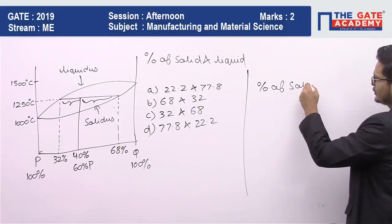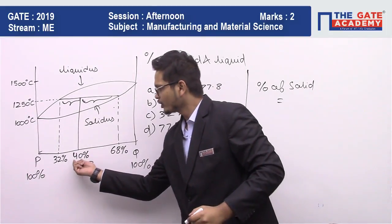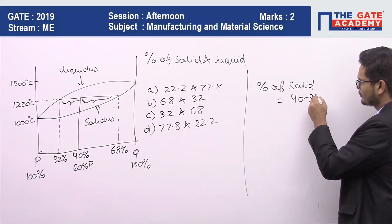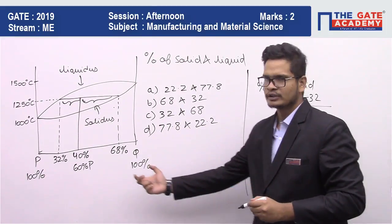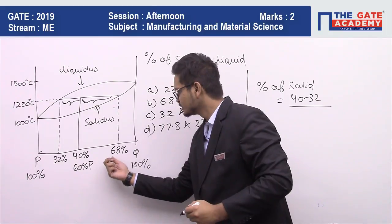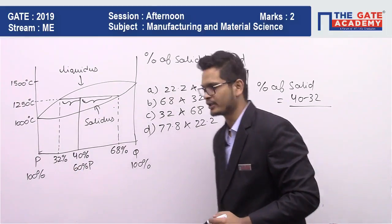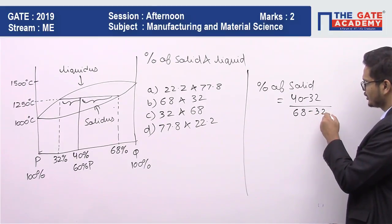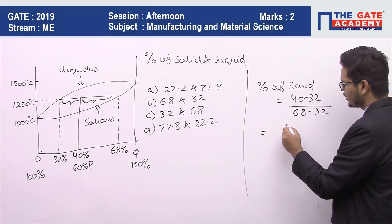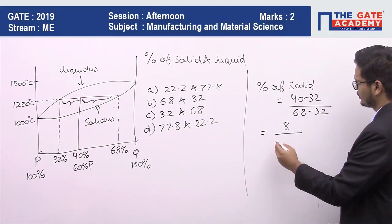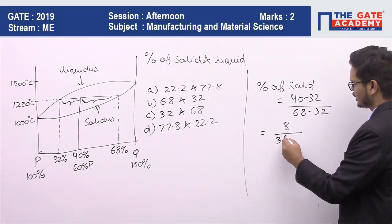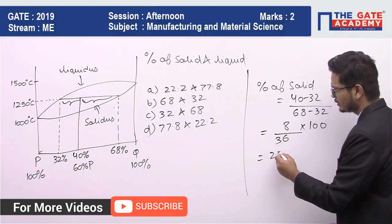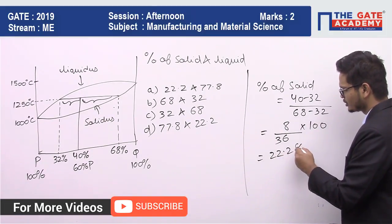The percentage of solid is: (40 minus 32) upon the total length (68 minus 32), which gives us 8 upon 36, multiplied by 100. This comes out to be 22.2 percent.